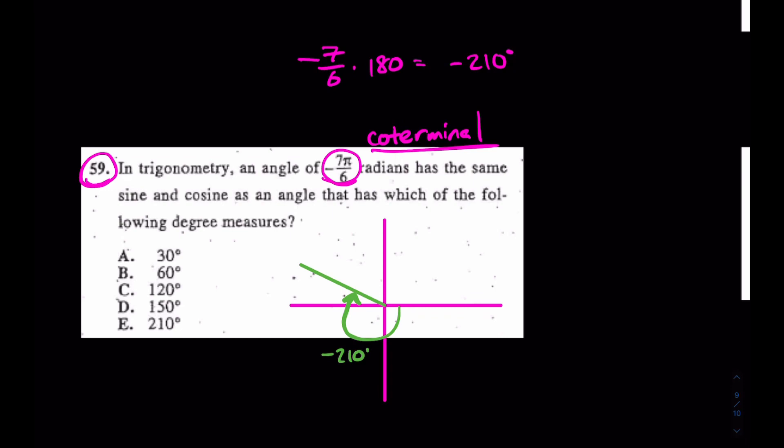In other words, what's a positive angle? Look at the answer choices, they're all positive. What is a positive answer choice or positive angle measure that also gets you there? Well, it would be 150 degrees. And it has to be because remember, 210 and 150 make 360.